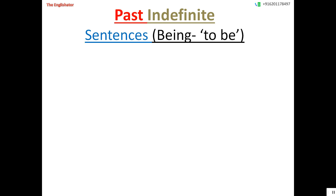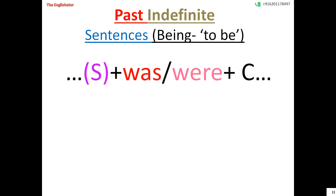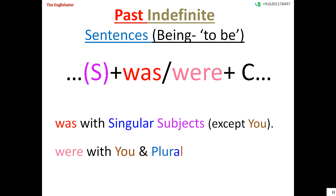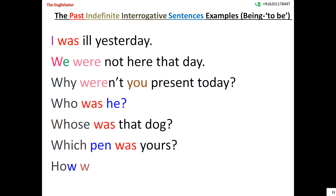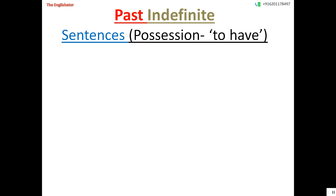Now let us see how to express the state of being in the past. The formula uses either 'was' or 'were' depending on the number and person of the subject, together with a complement. 'Was' is used with singular subjects except 'you,' and 'were' is used with 'you' and plural subjects. Examples: I was ill yesterday. We were not here that day. Why weren't you present today? Who was he? Whose was that dog? Which pen was yours? How weren't they bullies?